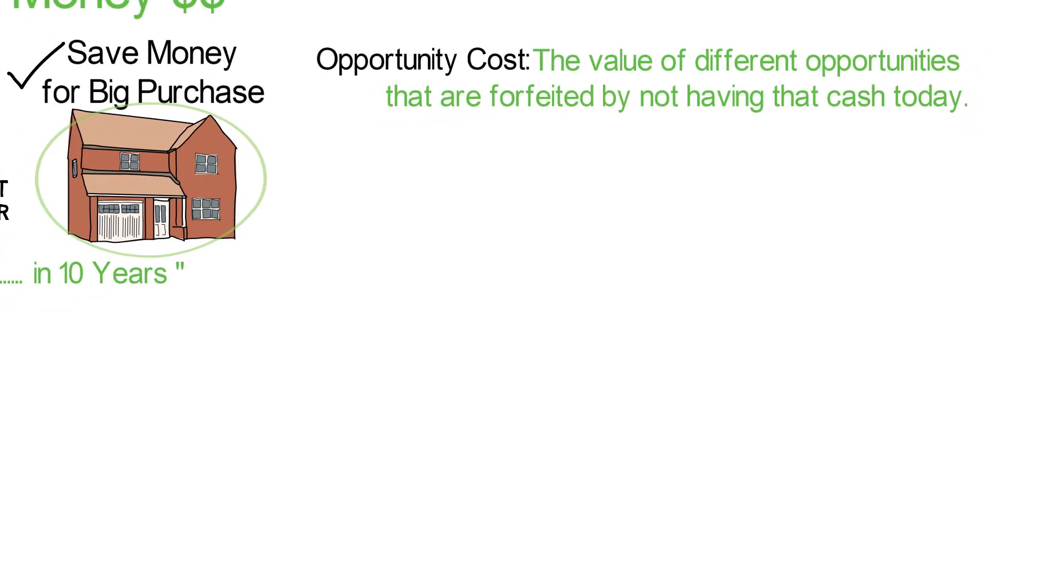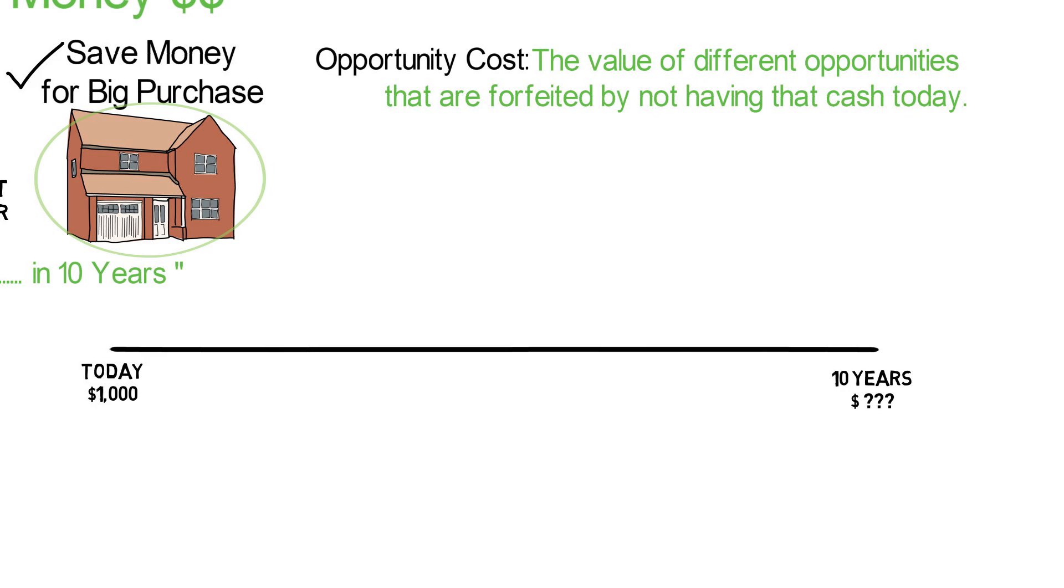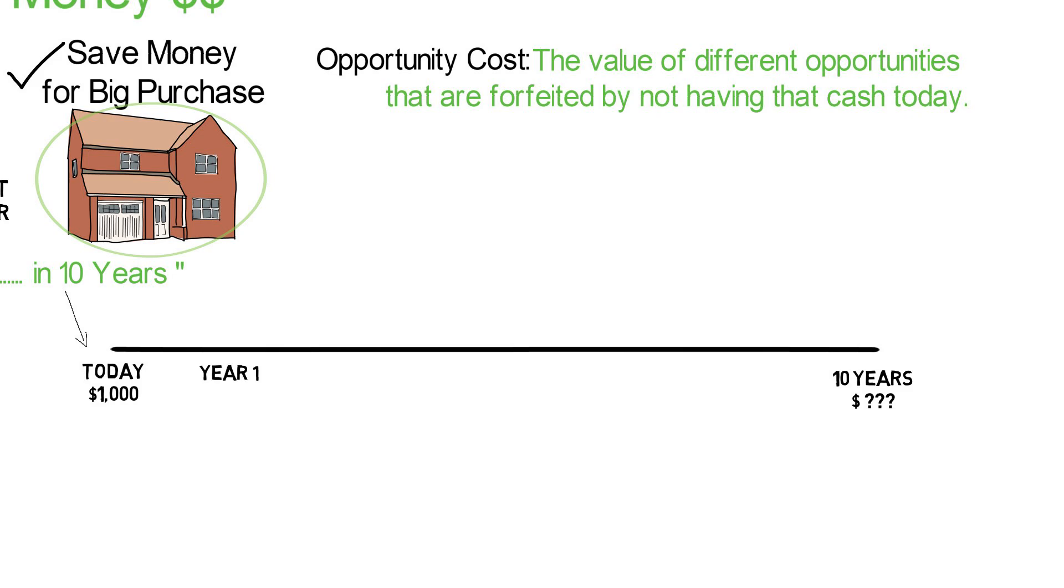So, let's see how this works. We're saving for a house. For now, you have $1,000 to start saving. We want to save for 10 years. How much will we have in 10 years? Let's look closer. So, here we are today. We have our $1,000. What will it be worth next year? Well, that depends on what you do with it. If you put it in a savings account that pays 2% per year, well, that $1,000 is worth $1,020 next year. Not bad.